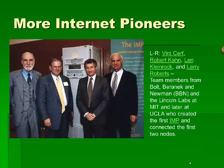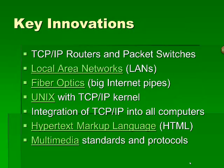Here is a picture of the four probably most important members of the team from Bolt, Beranek, and Newman, BBN, and the Lincoln Labs at MIT, including Larry Roberts of UCLA, who created the first router, the IMP, and connected the first two nodes of the system. A key innovation behind the Internet was the creation of the TCP/IP set of protocols and the routers consistent with those.